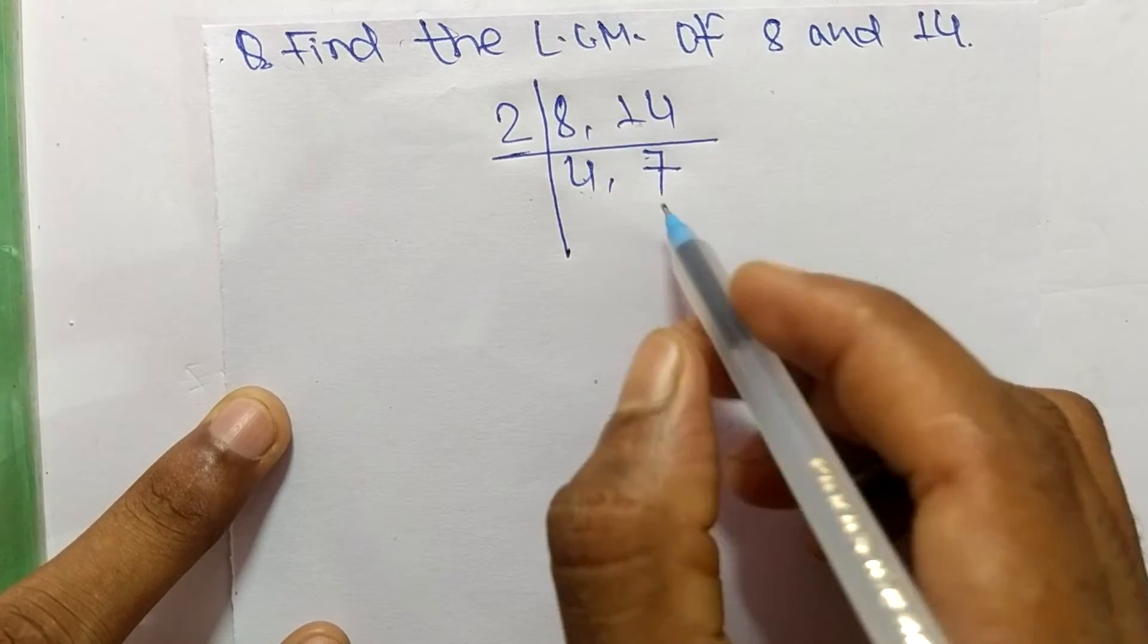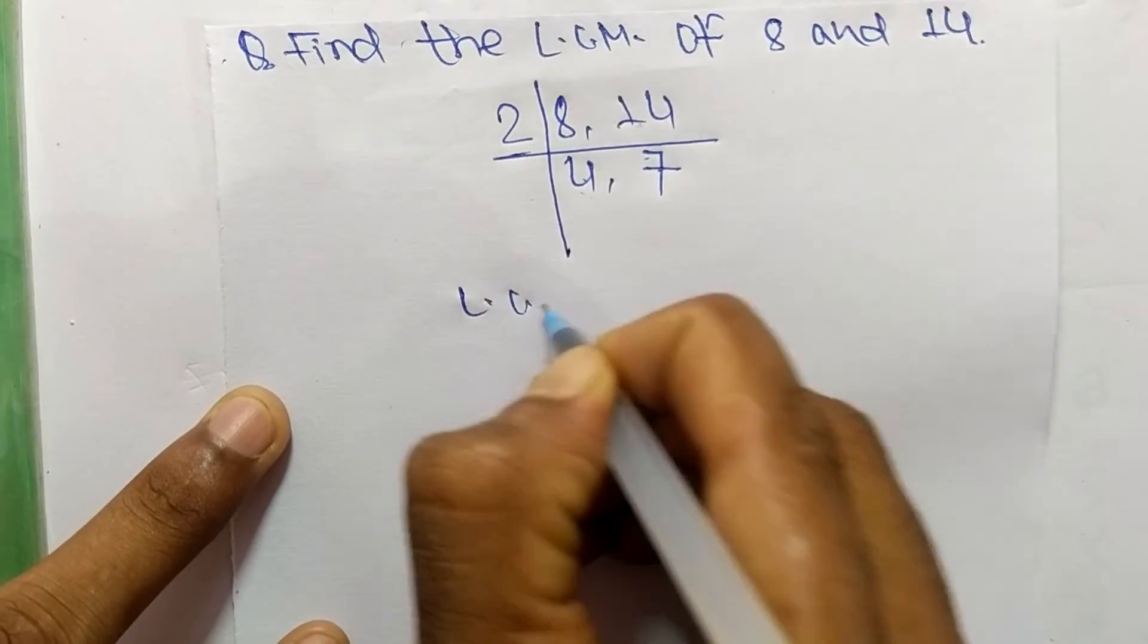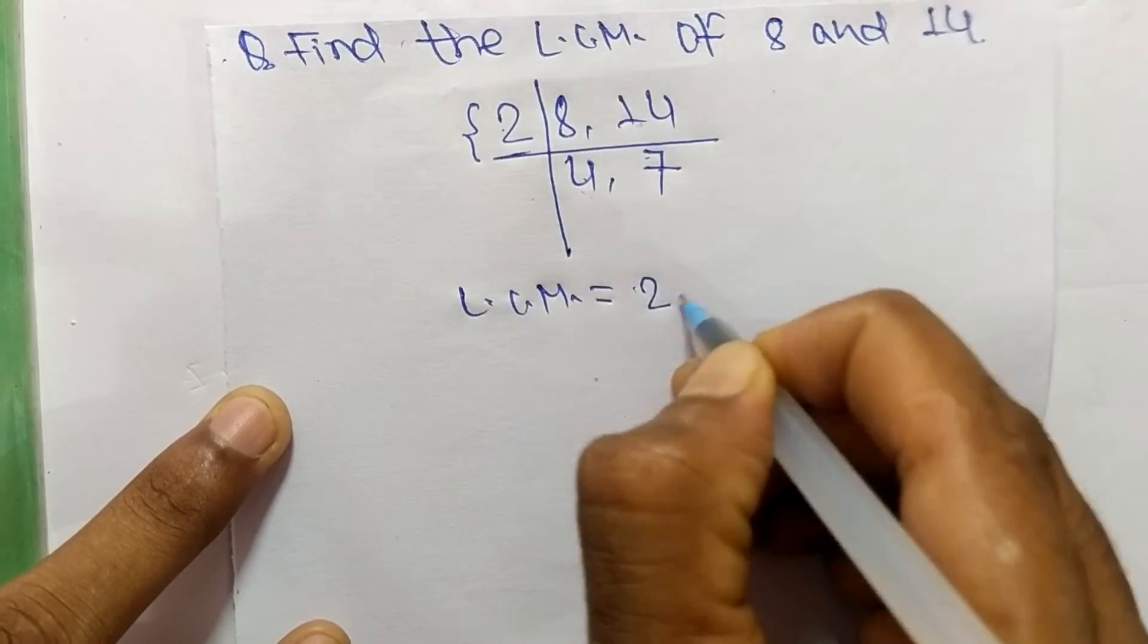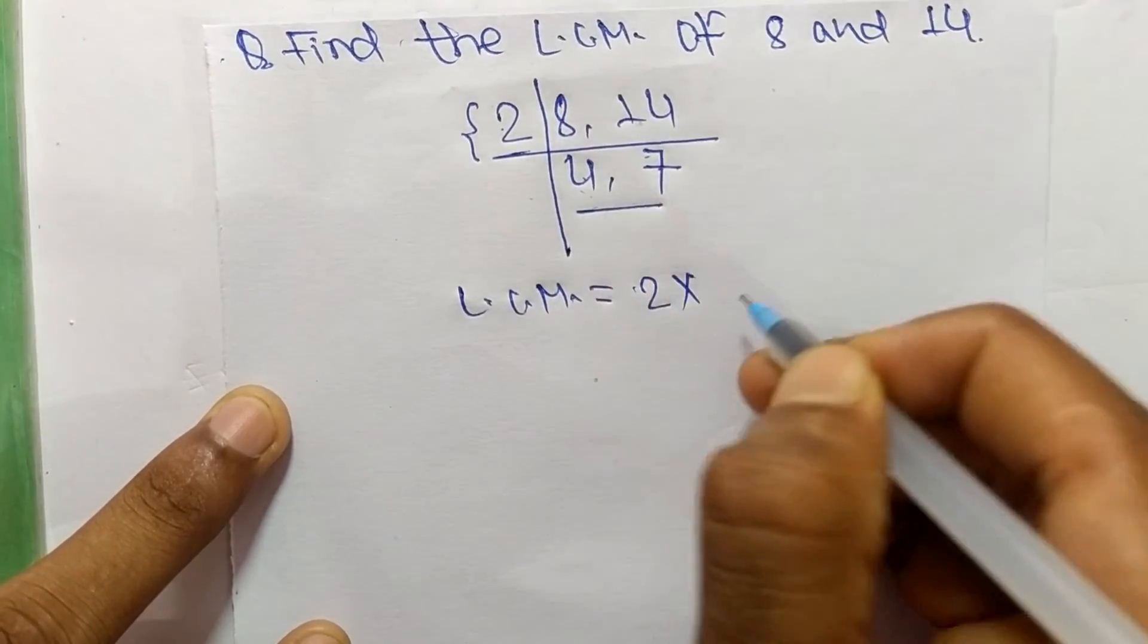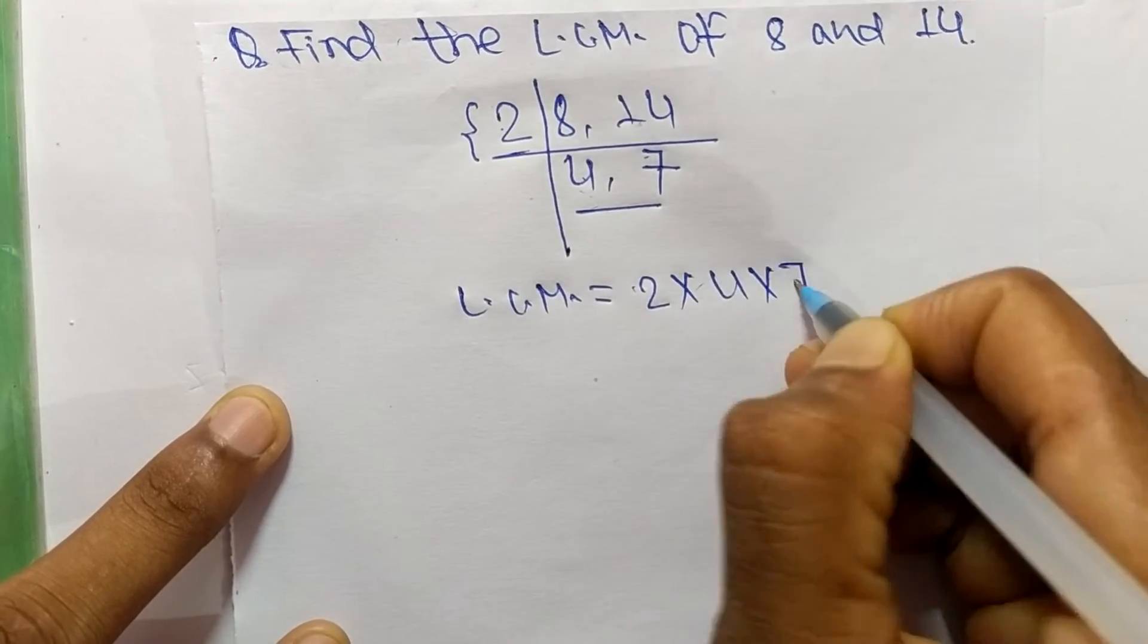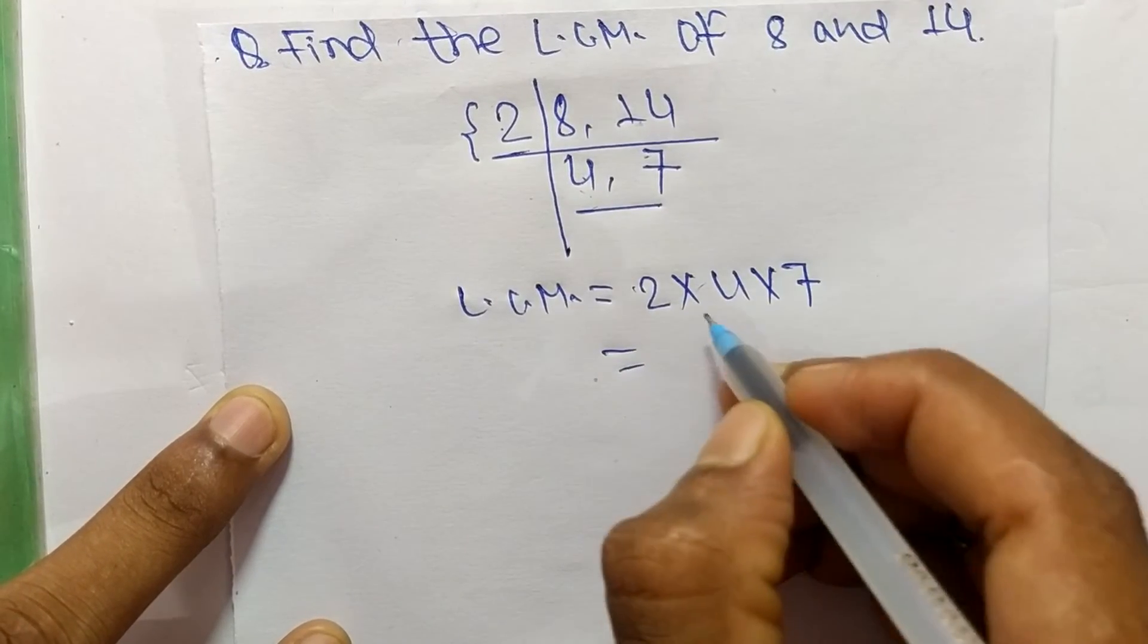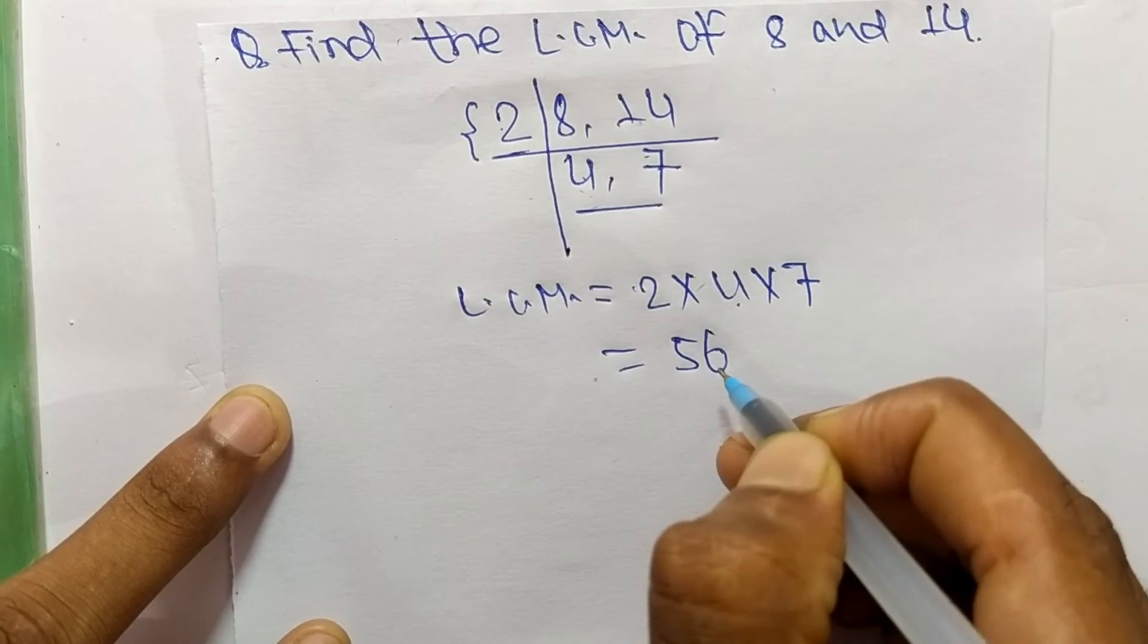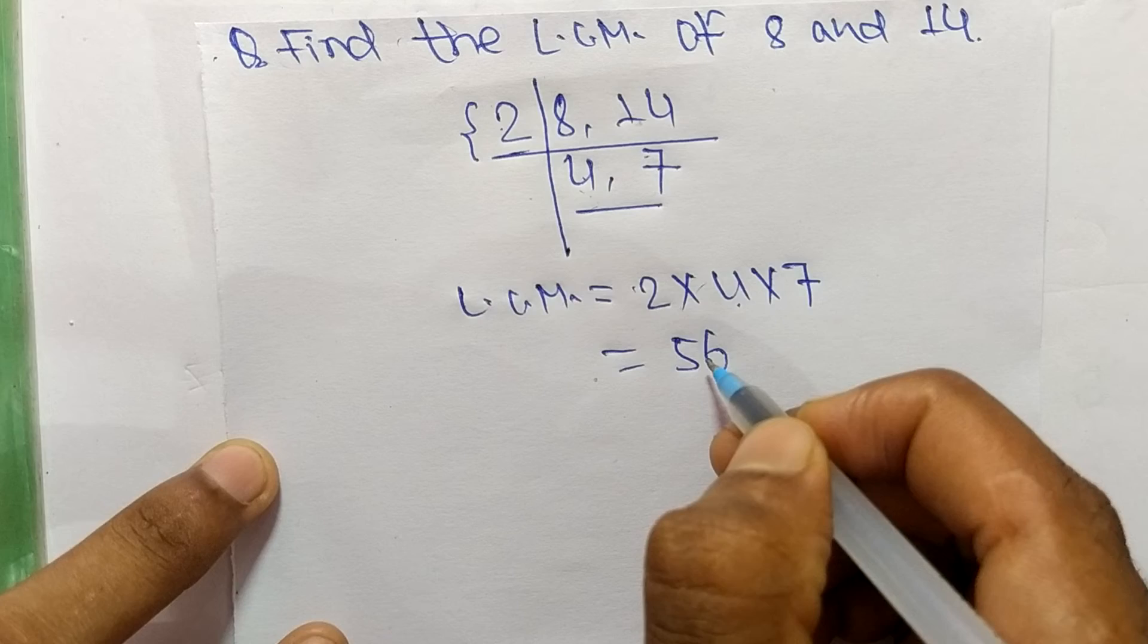So now LCM is equal to from this part it is 2, and from this part it is 4 times 7. So 2 times 4 means 8, and 8 times 7 means it is 56. So 56 is the LCM of 8 and 14.